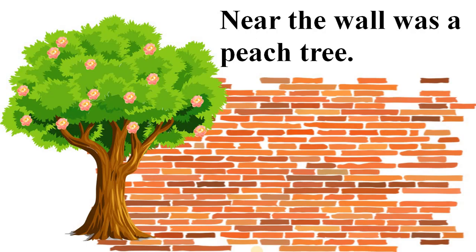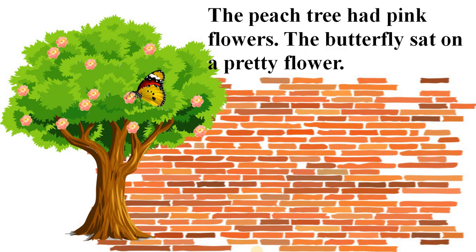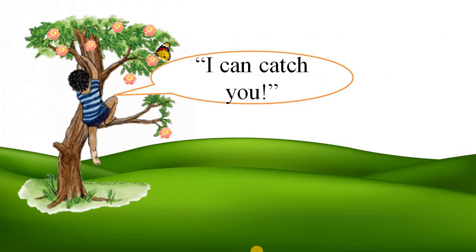Near the wall was a peach tree. Peach to aapne dekha hi hoga. Isse aap aadu ke naam se bhi jaante hain. So the peach tree had pink flowers. The butterfly sat on a pretty flower. Here, pretty means beautiful. I can catch you, shouted Sonu. He climbed up the tree.